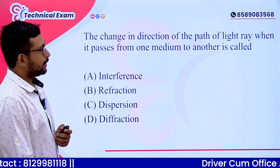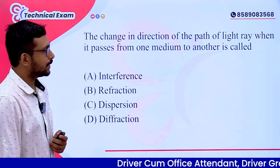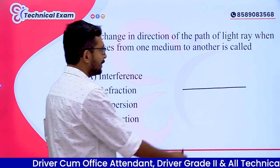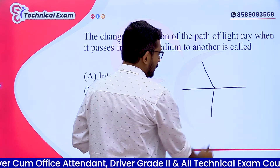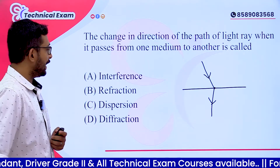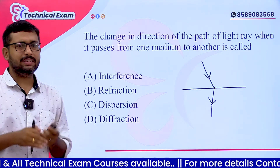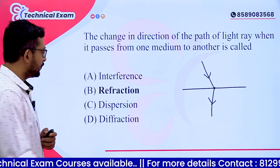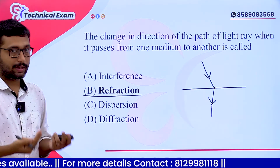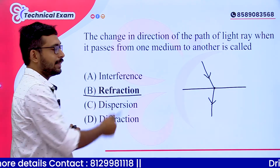The change in direction of the path of a light ray when it passes from one medium to another is called — options: A. Interference, B. Refraction, C. Dispersion, D. Diffraction. The answer is Option B, Refraction. This is basic physics.